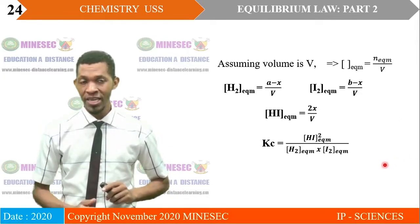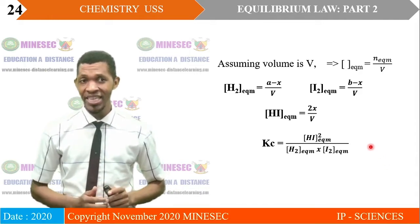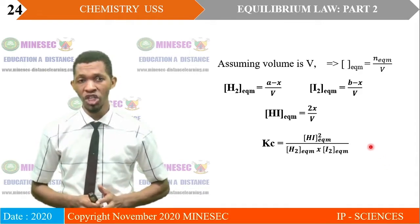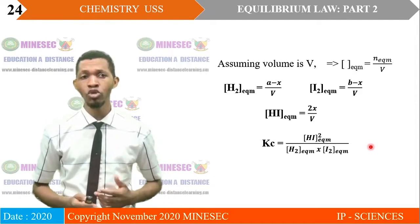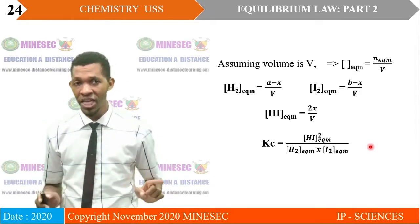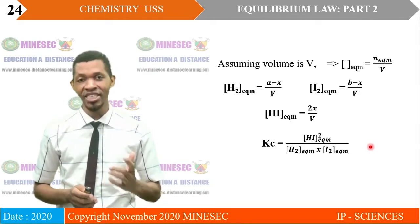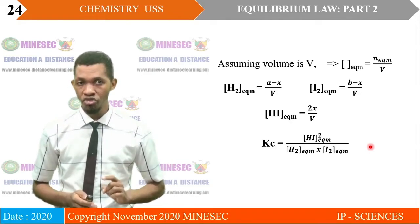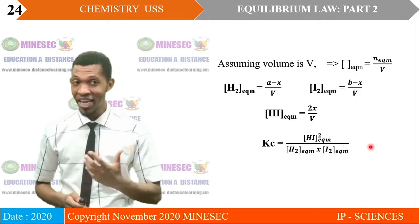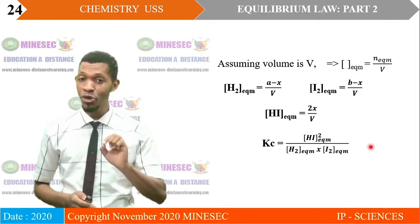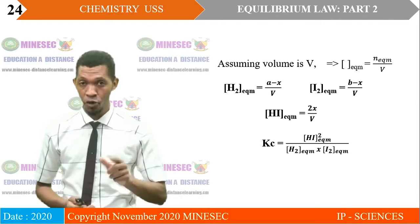Substituting in the equilibrium expression, Kc = [HI]² / ([H₂] × [I₂]), and simplifying gives the value of the equilibrium constant Kc for the reaction.